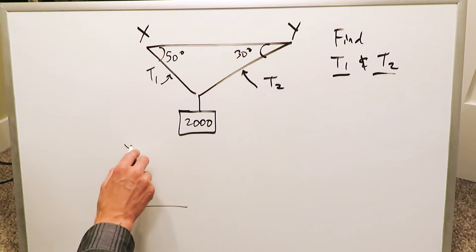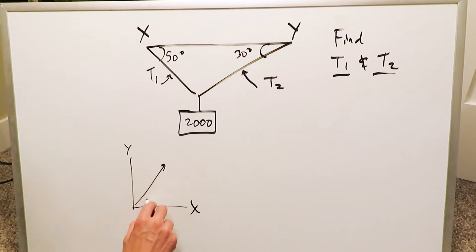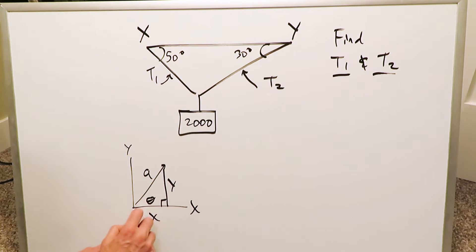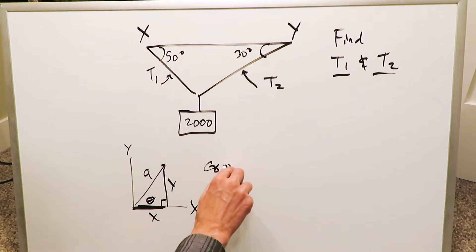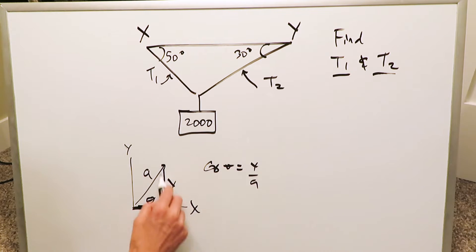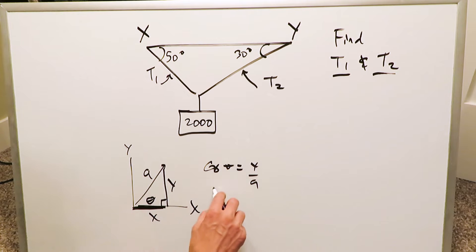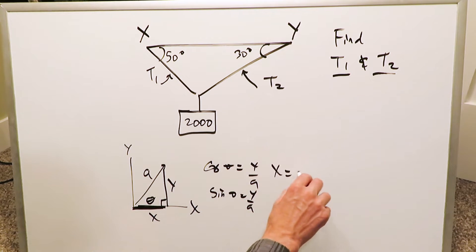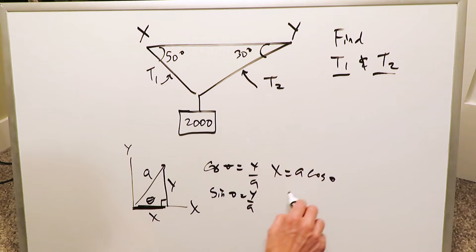Think about it this way: you have an x and a y axis at a certain angle. There's a value 'a', a dimension x, and a dimension y, forming a right triangle. To find the horizontal component you use cosine theta — that's x over a, so x equals a cosine theta. To find the vertical component you use sine theta — that's y over a, so y equals a sine theta.